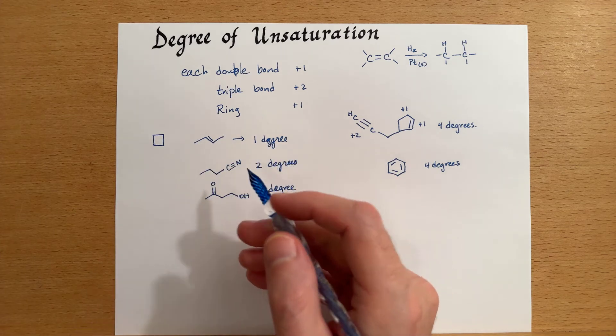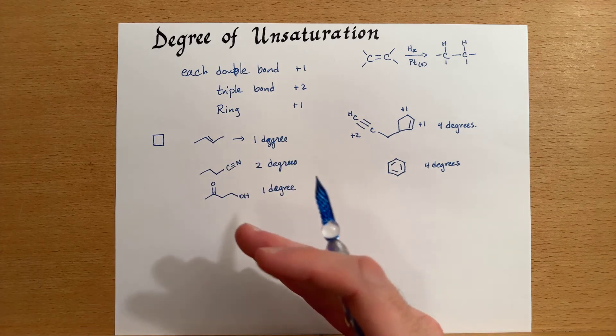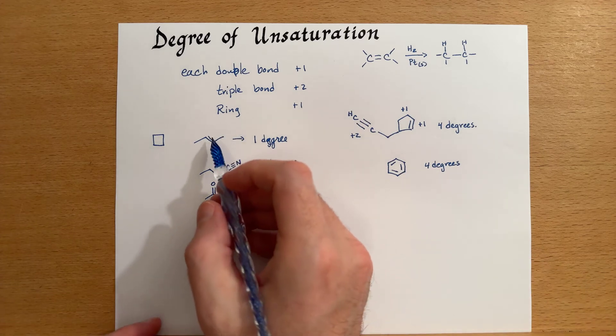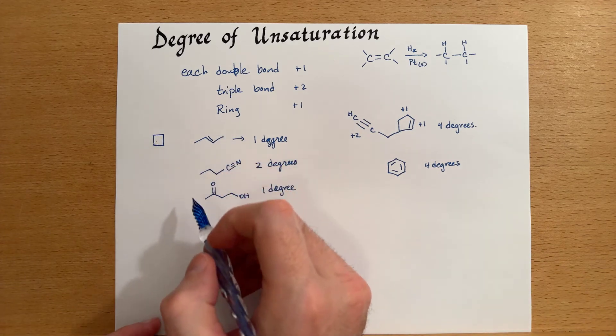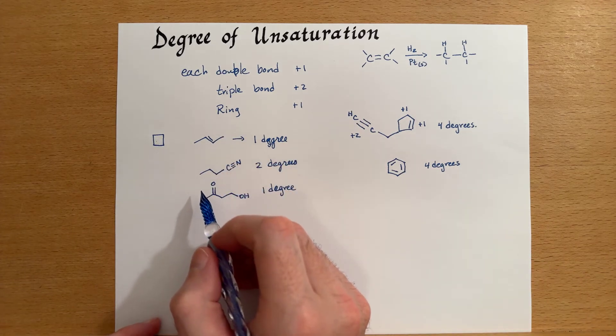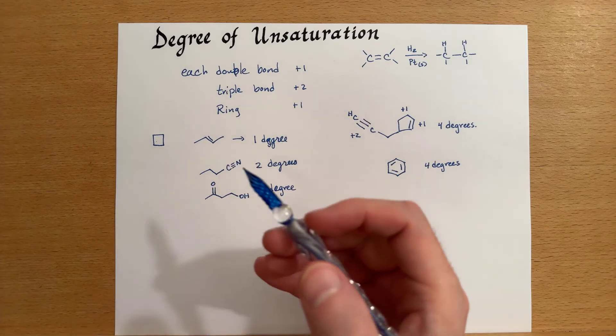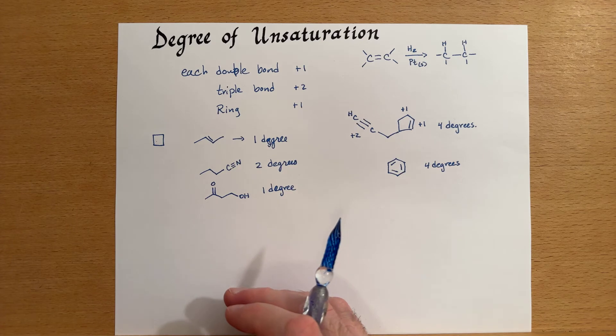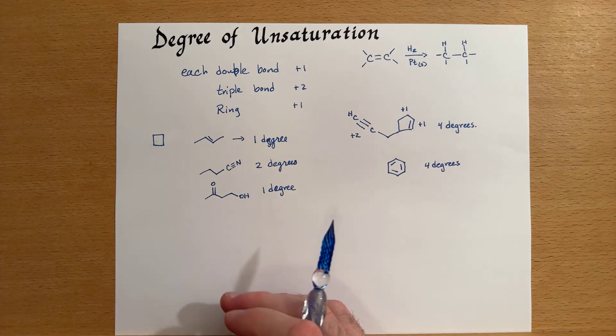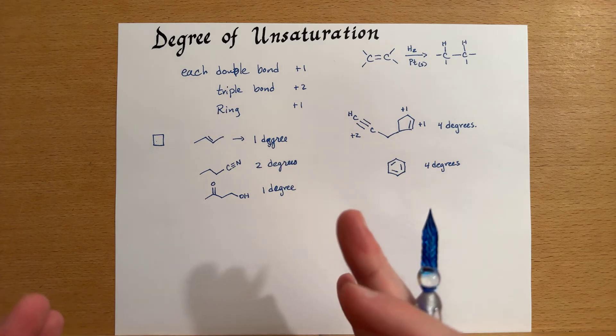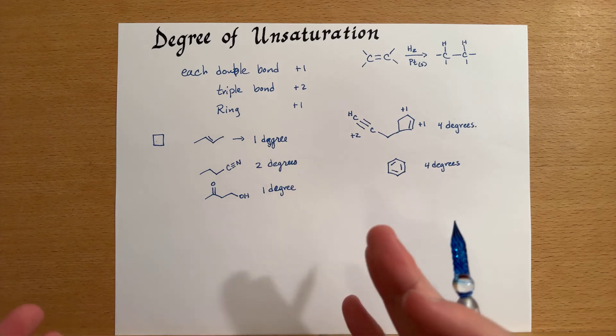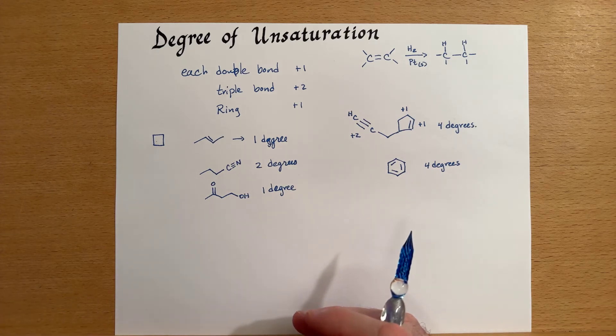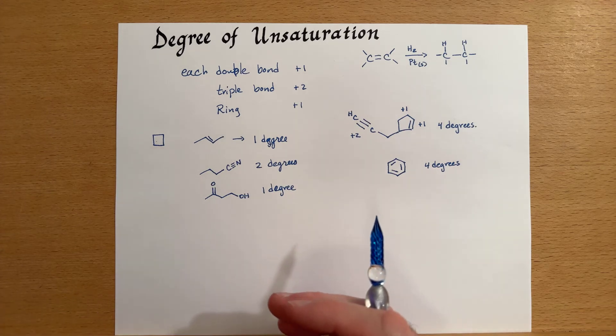That's one of the functions of looking at the degrees of unsaturation. Both of these have one degree of unsaturation. They both have four carbons. Therefore, we can identify that they will have the same number of hydrogens because they have the same amount of unsaturation. That's one of the uses of this calculation or determination.